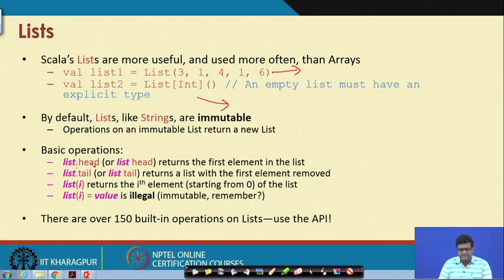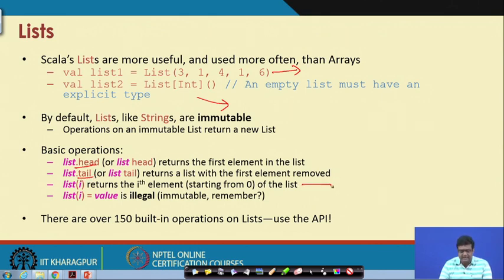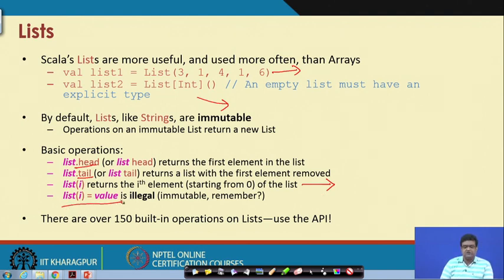There are many functions defined on lists. For example, you can use list.head to get the first entry, or list.tail to get the last element. In general you can get the ith element of the list. However, you cannot do something like list[i] = value because lists are immutable.